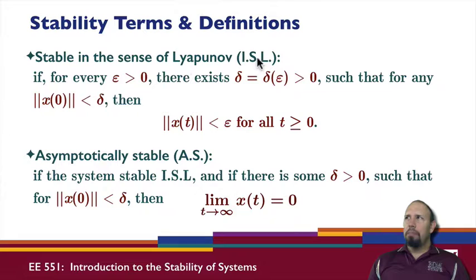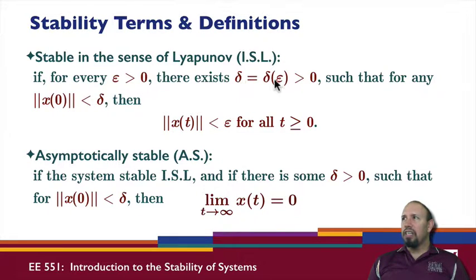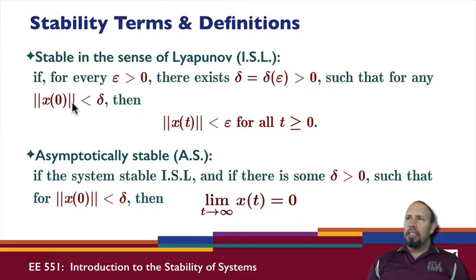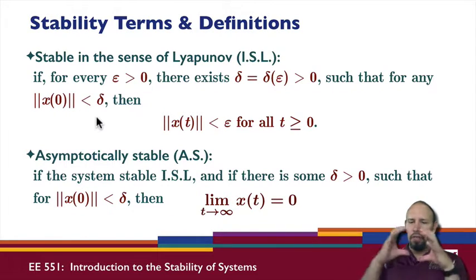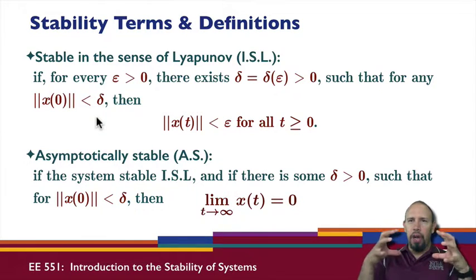Stable in the sense of Lyapunov (ISL) is defined mathematically: for every epsilon greater than zero — and usually we're talking about a very small epsilon — there exists a delta, which may be a function of epsilon, such that if the norm of the initial condition x is within delta, then x of t remains within epsilon for all time.